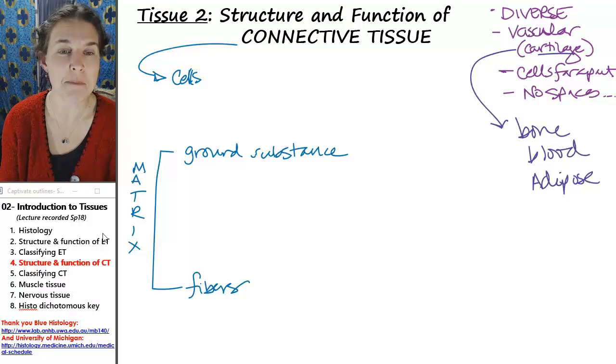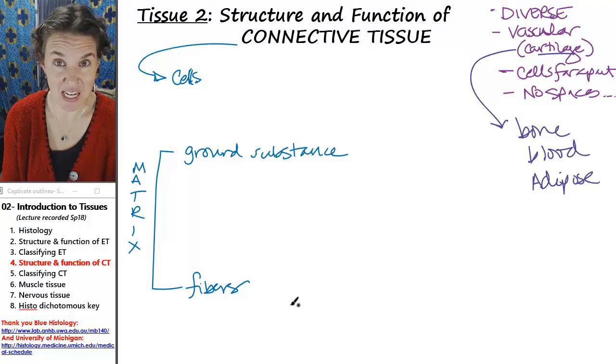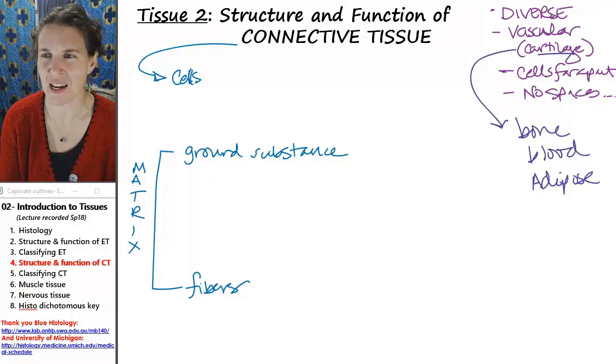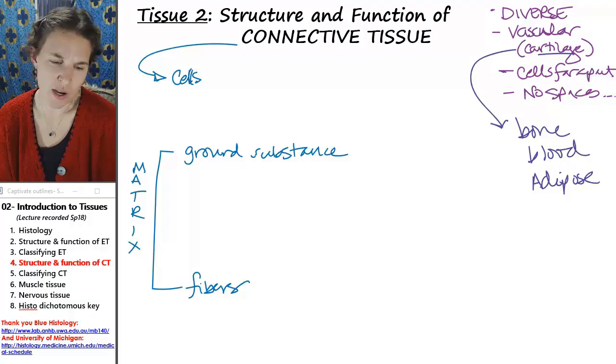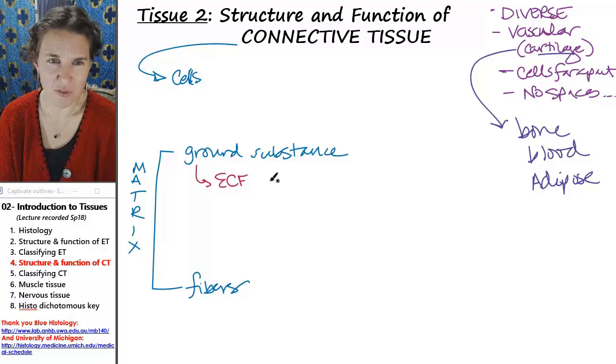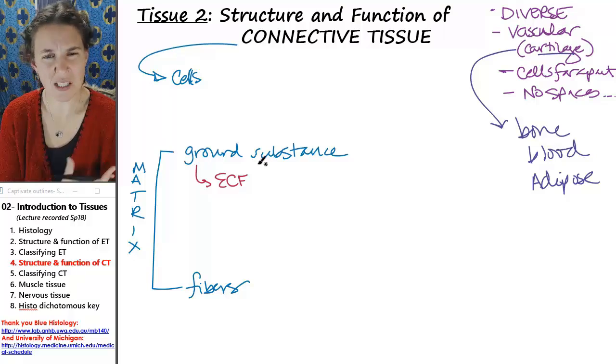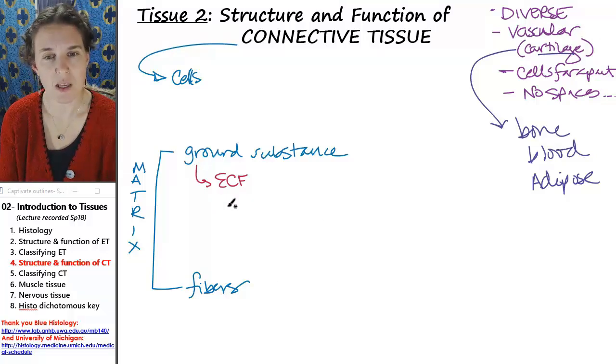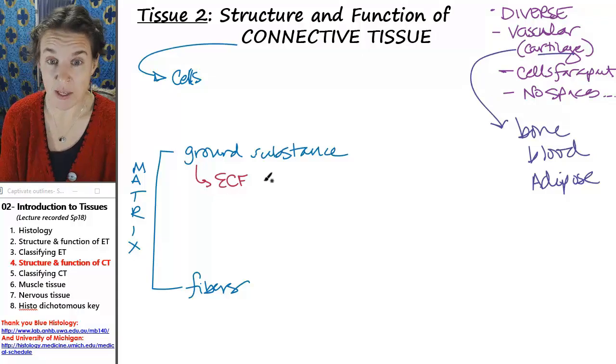Sometimes identifying the matrix of ground substance and fibers is easy, and you can see the cells embedded in there. Other times, not so much. The ground substance is like the soup. Really, I'm going to throw this out there for you. It's the extracellular fluid of the tissue. So really, this ground substance is whatever the fluid is that the fibers are sitting in. Ground substance includes the fluid plus any solutes in the fluid.